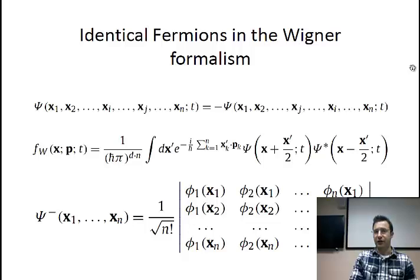Concerning identical fermions in the Wigner formalism, this is the way it works. There is actually nothing extremely complicated. If you are familiar with fermions in the Schrodinger formulation of quantum mechanics, you may already know that a wave function corresponding to a system of identical fermions is an anti-symmetric wave function. This means that if you exchange, for example, two particles in this wave function,